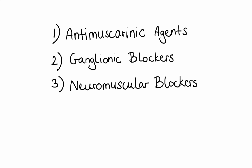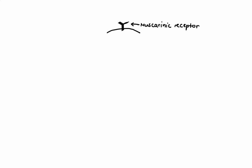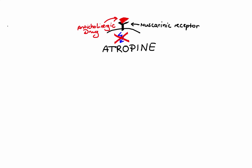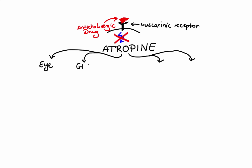Let's start with anti-muscarinic agents, also known as anti-cholinergic drugs. These agents block primarily muscarinic receptors, causing inhibition of muscarinic functions. One of the most well-known medications in this group is atropine. Atropine's primary sites of action are the eye, GI tract, heart, salivary, sweat, and lacrimal glands.